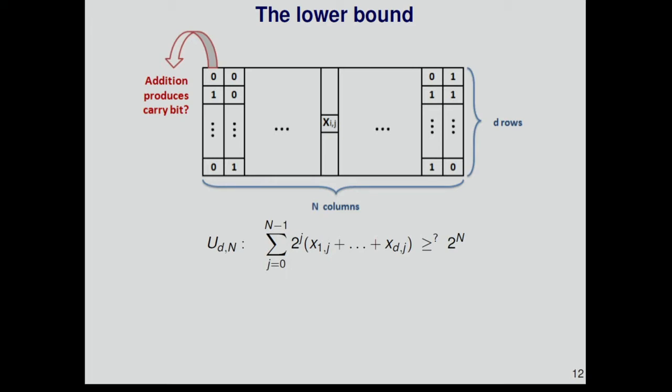This can be represented by a single threshold gate, which just converts the binary numbers to decimal and checks if it's 2 to the n. Formally, we established the following theorem. We showed that any depth d monotone majority circuit computing u_d,n, summing d numbers, must have size 2 to the n to the 1 over d.